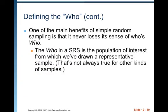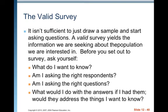One of the main benefits of simple random sampling is that it never loses its sense of who's who. The who in an SRS is the population of interest from which we've drawn a representative sample. That's not always true for other kinds of samples. A valid survey yields the information we are seeking about the population we are interested in. Before you set out to survey, ask yourself: What do I want to know? Am I asking the right respondents? Am I asking the right questions? What would I do with the answers if I had them? Would they address the things I want to know?